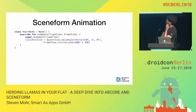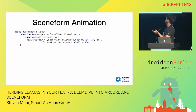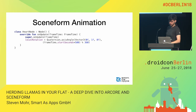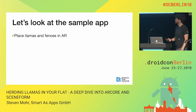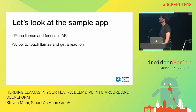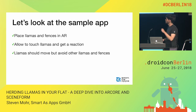The other animation part is the SceneForm on-update approach, where on every onUpdate call you just change the local rotation by calculating some new degree and setting it. So let's look at our sample app checklist: we want to be able to place llamas in AR — done. We want to allow touching llamas and get a reaction — done. And llamas should move but avoid others — we have collision detection so they don't overlap.